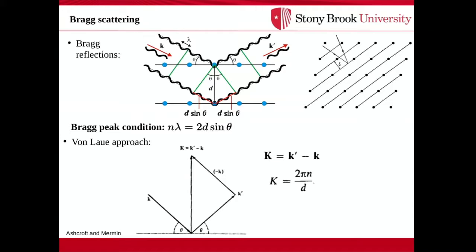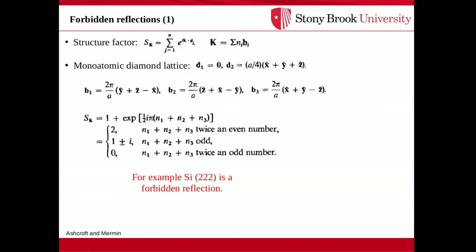There is a more rigorous approach — the von Laue approach — which is equivalent and shows that the difference between the reflected wave vector and the incident one must be a reciprocal lattice vector. This approach better describes the planes: one looks at the difference k' - k = G, where G is a reciprocal lattice vector. One gets Bragg peaks if the difference between the incident and reflected wave vectors equals a reciprocal lattice vector K.